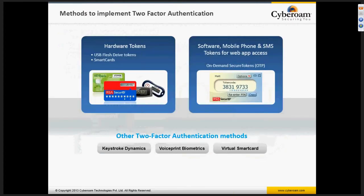What are the methods to implement two-factor authentication? There are two different methods: one is to use hardware tokens, USB flash drive tokens, or smart cards. As you can see on this slide, there are RSA security flash cards and smart cards which have numbers that keep flashing after every few time periods. In combination, we also have software, mobile phones, and SMS tokens for web application access. These are called on-demand secure tokens, or OTPs.